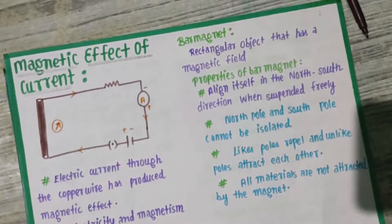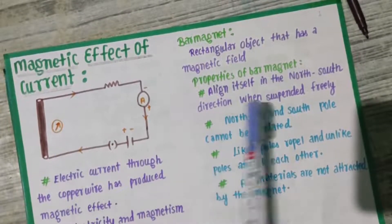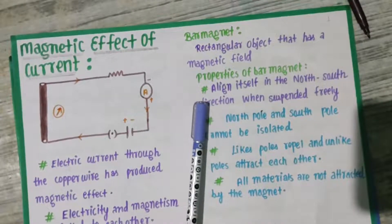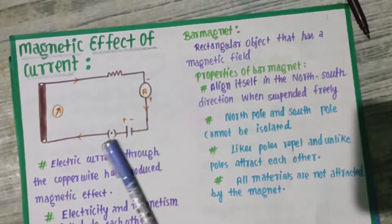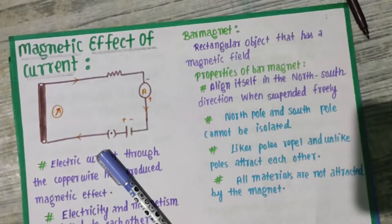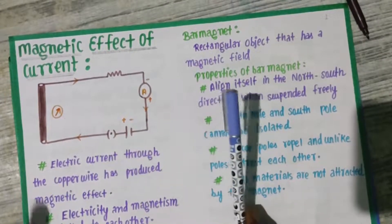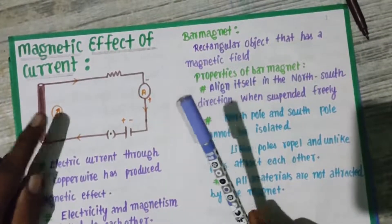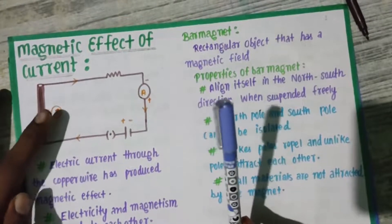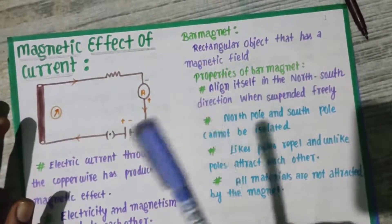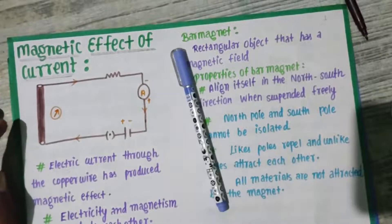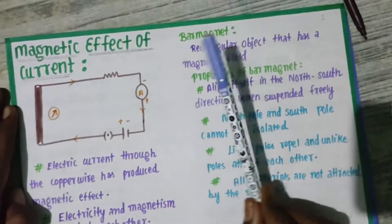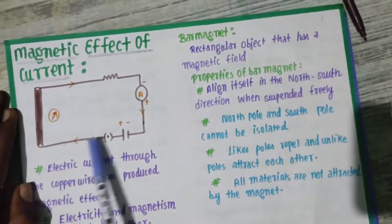If we reverse the direction of the current, the compass needle will deflect in the opposite direction. You can see it behaves like a magnet — when we bring a magnet nearby it starts to deflect, because the current-carrying wire creates a magnetic effect.